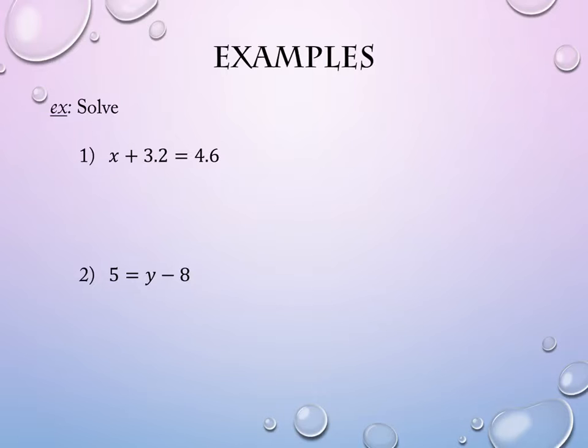So on this one, there is only one thing that's on the same side of the equation as the x. The only thing that's there is the addition of 3.2, so we're going to invert that. The opposite of addition is subtraction. So to remove the 3.2, we will subtract 3.2. We're doing that because 3.2 minus 3.2 is zero.